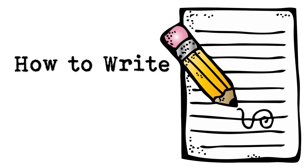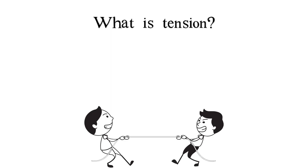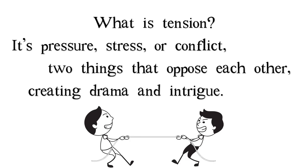How to write a short story. There's one essential ingredient for any good short story and that's tension. What is tension? It's pressure, stress, or conflict — two things that oppose each other creating drama and intrigue.